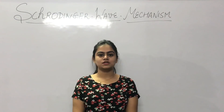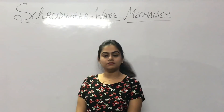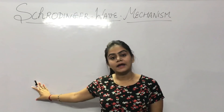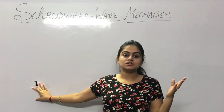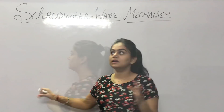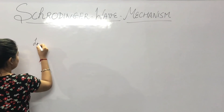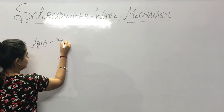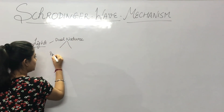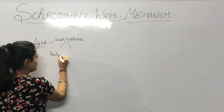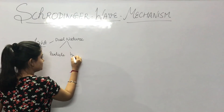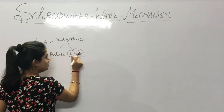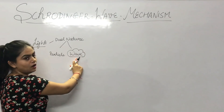Hello everyone, my name is Richa Sachdeva. Today we will study Schrödinger wave nature. First of all, light has dual nature. In previous lectures we have studied that a single photon has dual nature according to de Broglie — meaning light shows particle nature as well as wave nature. So now we are particularly studying about the wave nature of light.